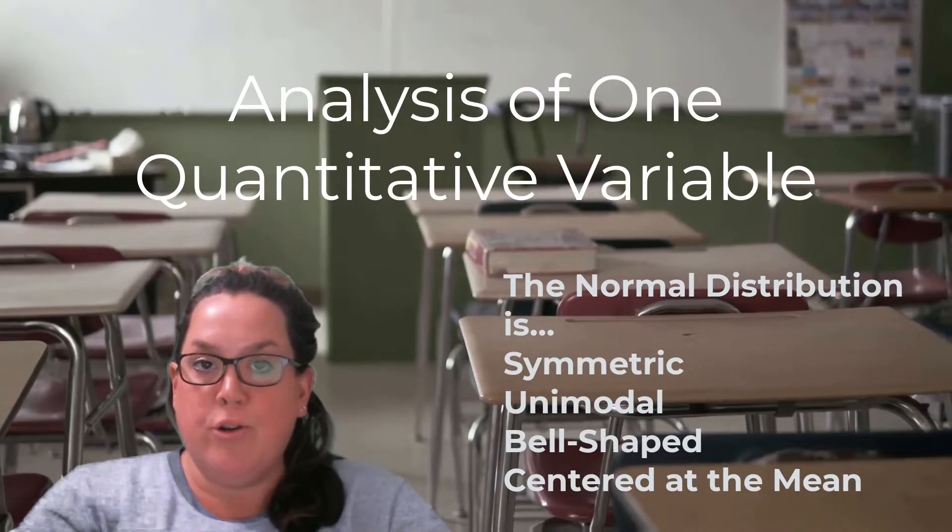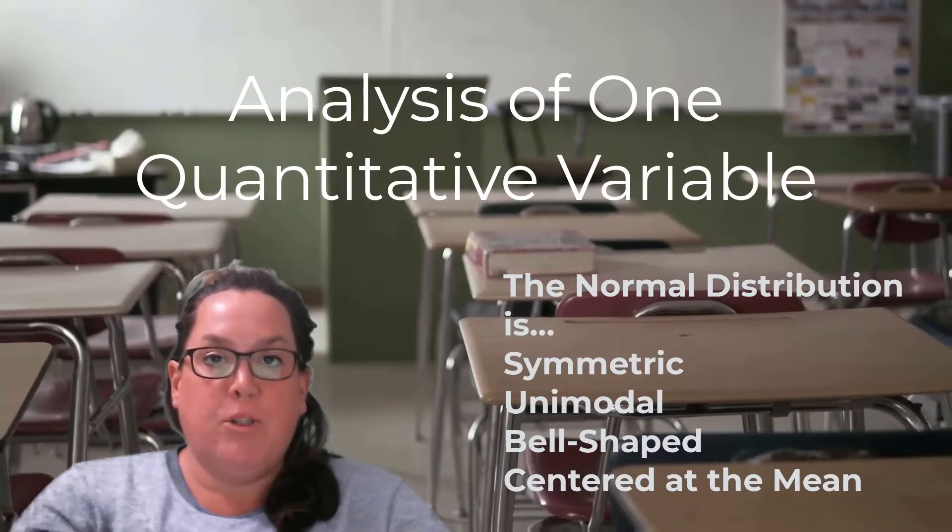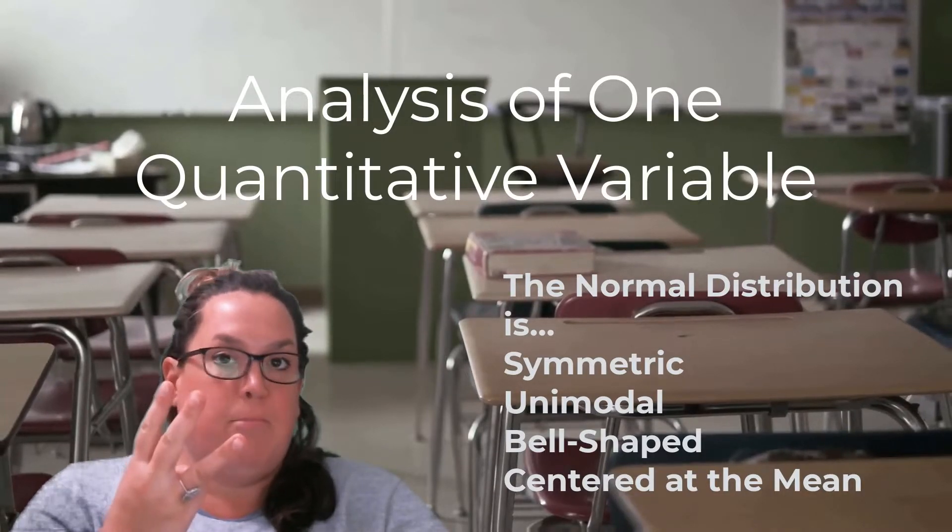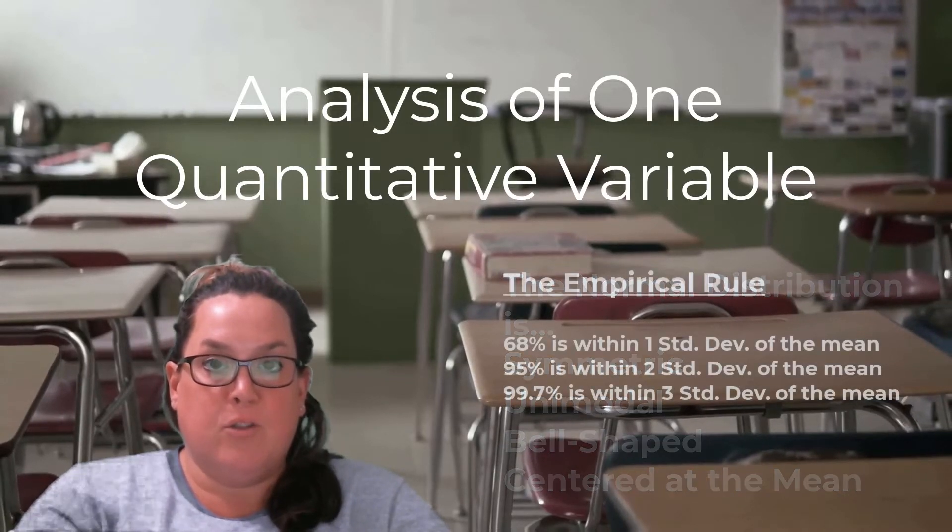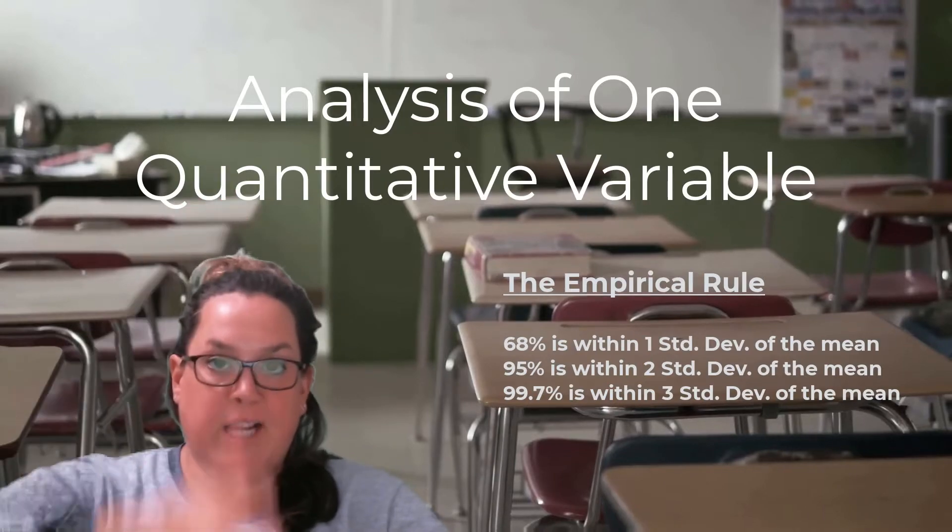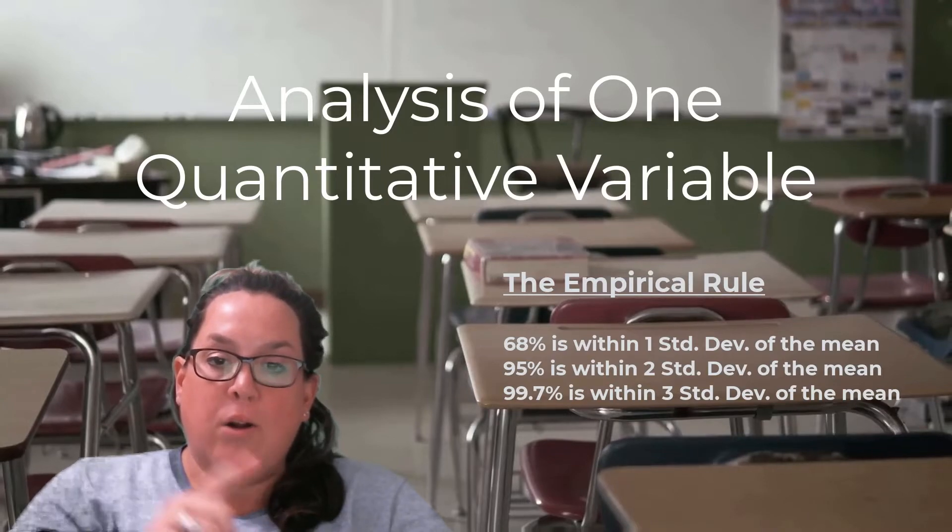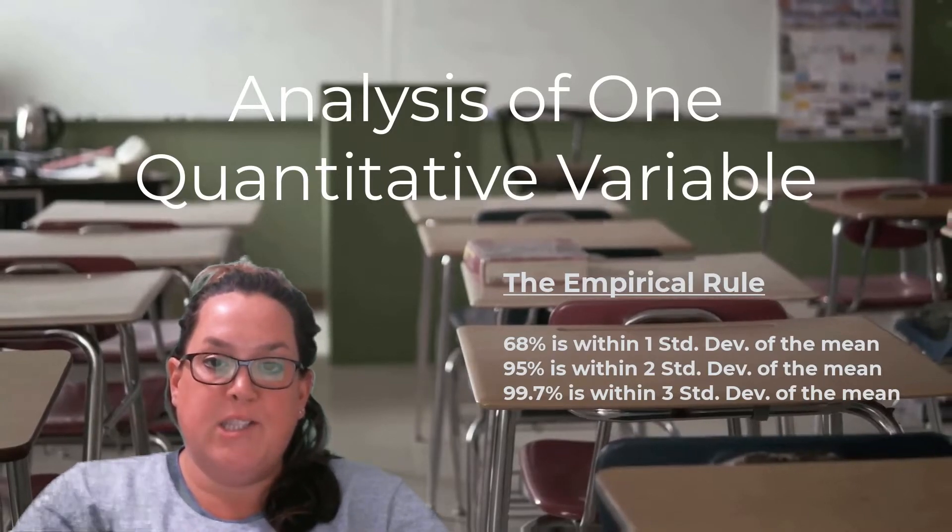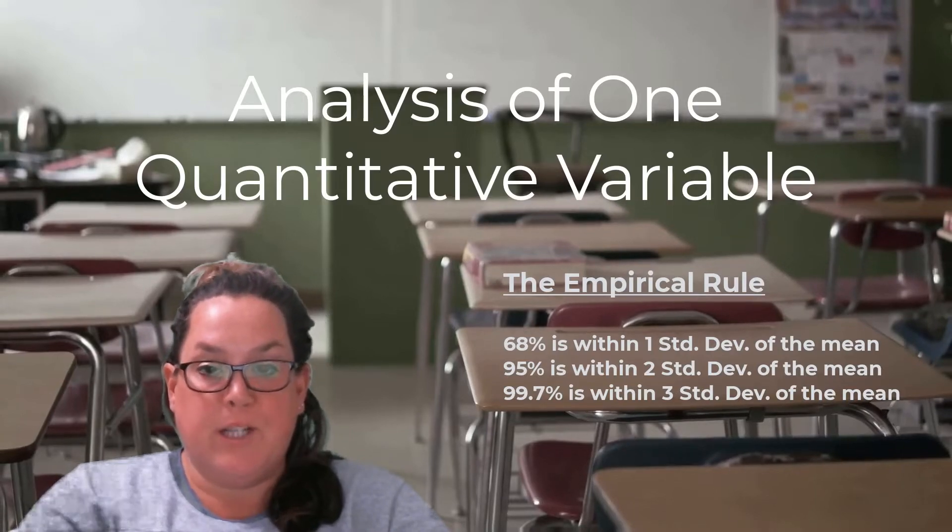And then we talked about how to utilize that normal distribution with something called the empirical rule, which breaks that curve up into three separate chunks that are one, two, and three standard deviations from the mean where the mean is always the center of that normal distribution. And with that one, two, or three cutoff points, we have 68, 95, and 99.7% respectively.